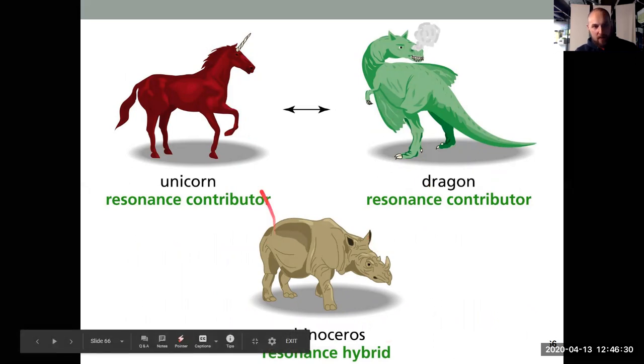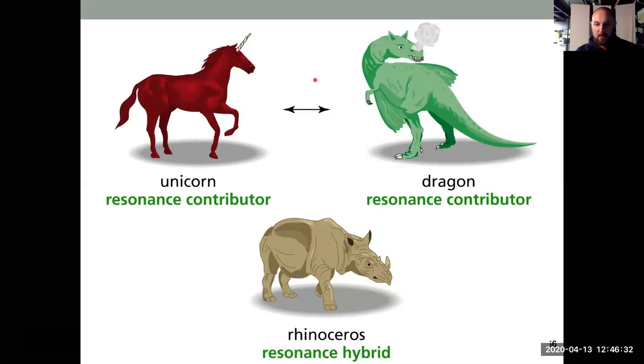Average the two simultaneously in a rhinoceros is what you can actually see. We draw resonance contributors because it's the best way we can represent them on paper. But what actually exists is an average between the two.